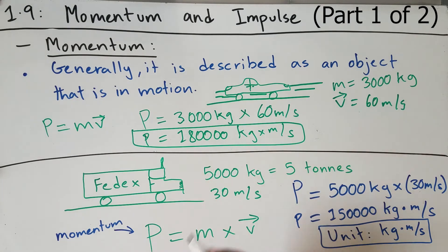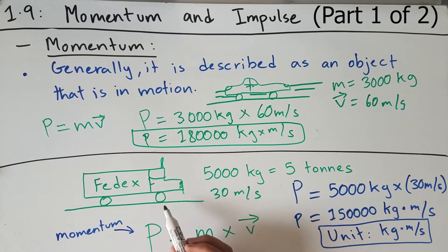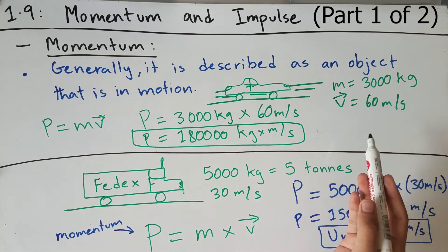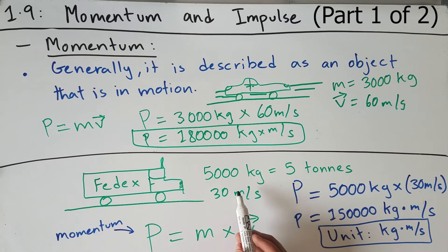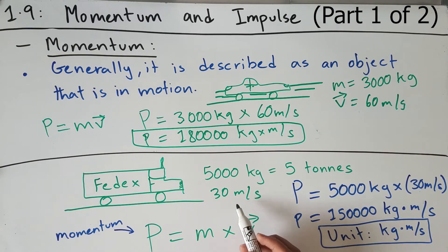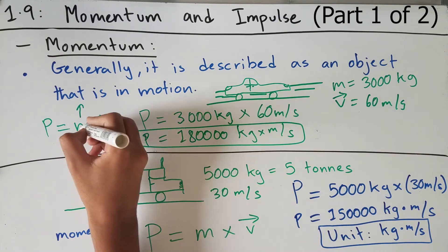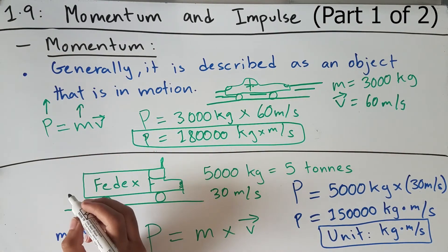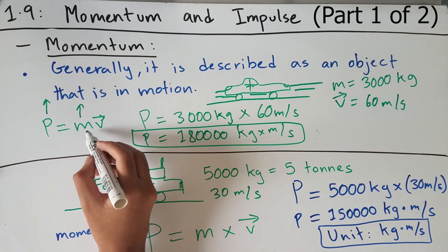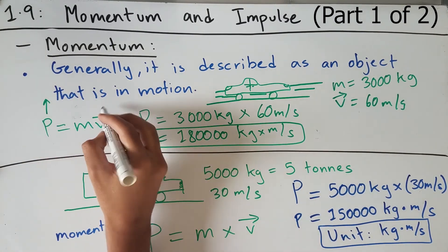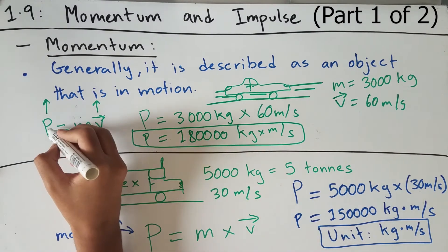If we look at the answers for the momentum of the truck and the car, we can see something strange. Generally, you'd expect a truck to have more momentum than a car. But in this case, even though the car's mass is about 2,000 kilograms less than the truck's 5,000 kilograms, the car's velocity is twice that of the truck, which brings the car's momentum higher. So if you increase either mass or velocity, the momentum increases proportionately.